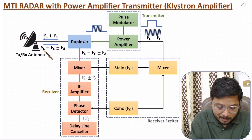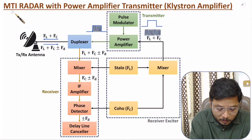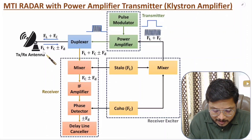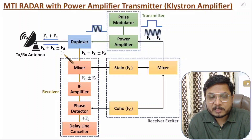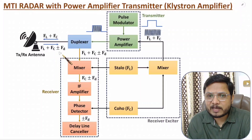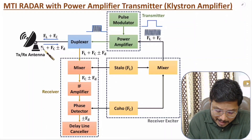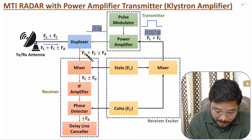That signal is transmitted via the duplexer through the antenna. We then receive echoes from the targets. Since we are dealing with a moving target, the received echo signal has frequency FL plus FC plus or minus FD, where the plus or minus FD is based on the motion of the target.